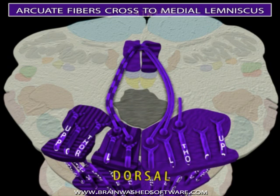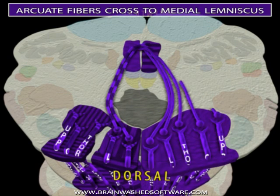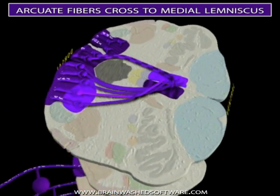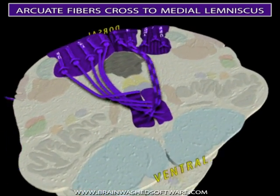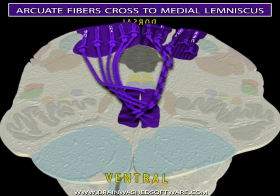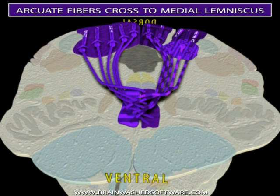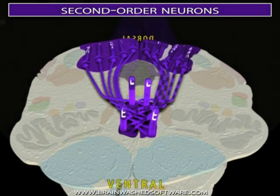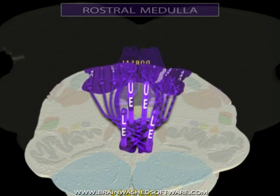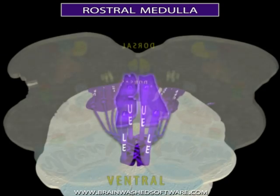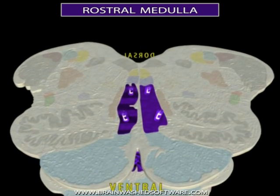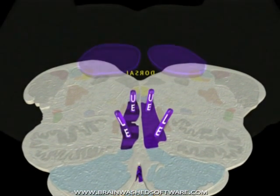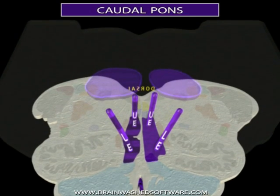The somatotopy from the spinal cord shifts from a medial-lateral pattern to a ventral-dorsal pattern, with the previously medial sacral axons becoming the most ventral. From this point on, only two axons will be illustrated in each medial lemniscus: one represents the axons of all the second-order neurons in nucleus gracilis, and the other the axons from all the second-order neurons in nucleus cuneatus.